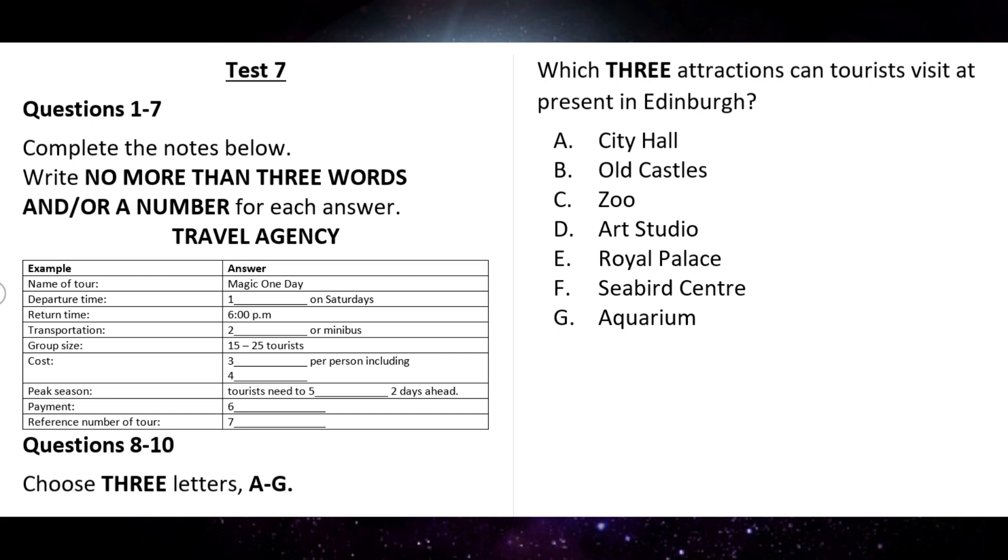Now, turn to section one. Section one. You will hear a conversation between a clerk and a tourist about a short trip. First, you have some time to look at questions one to five.